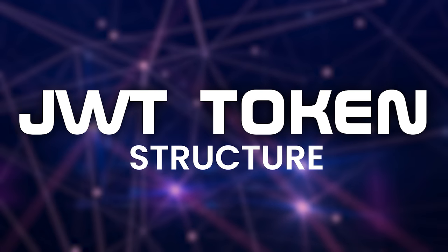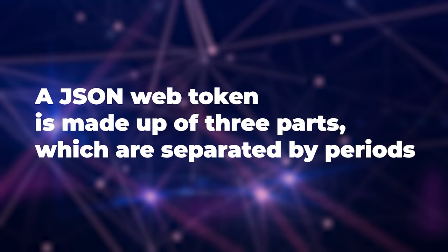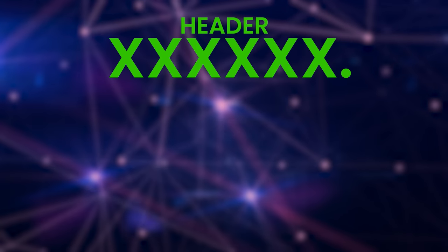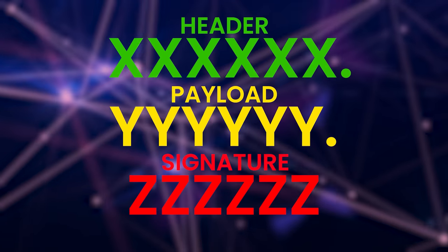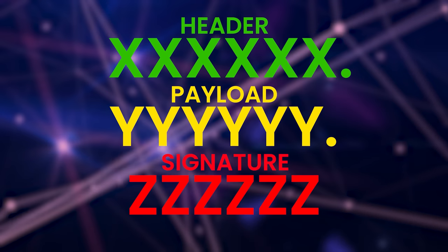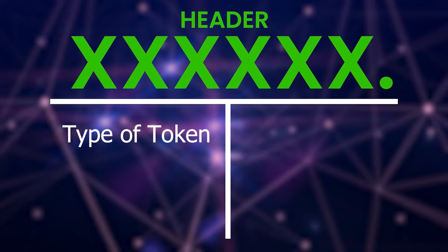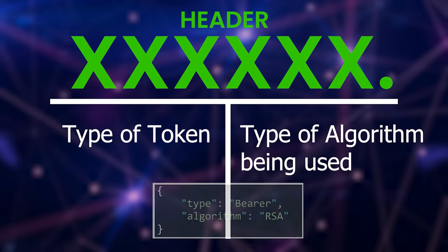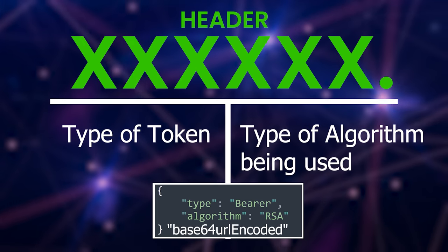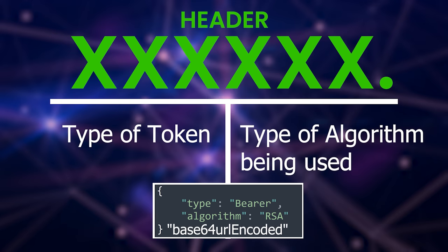To better explain the intricacies of JWT tokens, let's have a look at the JWT token structure. A JSON web token is made up of three parts, which are separated by periods — the first is the header, the second is the payload, and the last is the signature. The header typically consists of two parts: the first is the type of token, and the second is the type of algorithm being used. The contents of the header are base64 URL encoded to make up the first part of the JWT token.